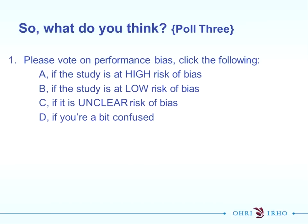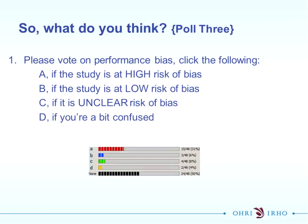This is poll three - what do you think about performance bias? High is A, low risk of bias is B, C is unclear risk, and D if you're still confused. Most people think it's at high risk of bias, some at low, some unclear, and a couple still confused. We'll try to reiterate with the example.